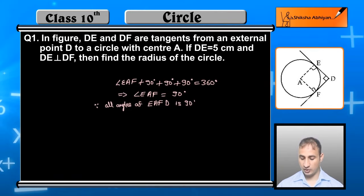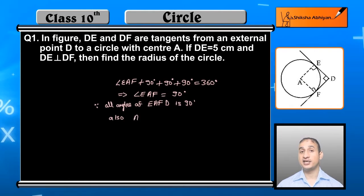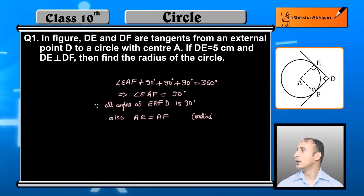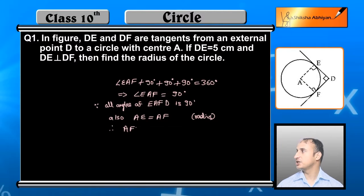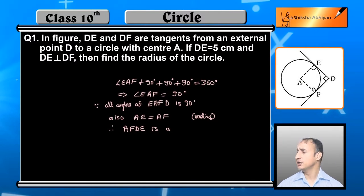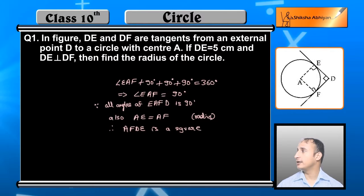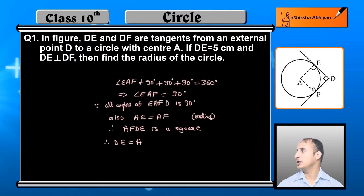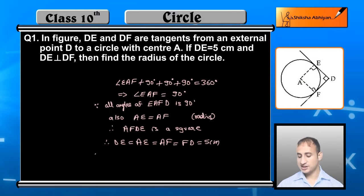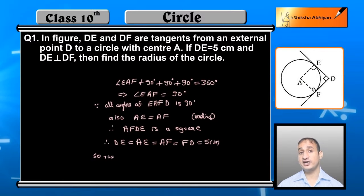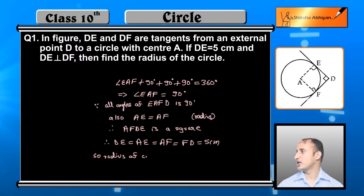Also, two adjacent sides DE and DF are equal (given as 5 cm). Since all angles are 90° and two adjacent sides are equal, AEDF is a square. Therefore DE = AE = AF = FD = 5 cm. So the radius of the circle, which is AE or AF, is equal to 5 cm.